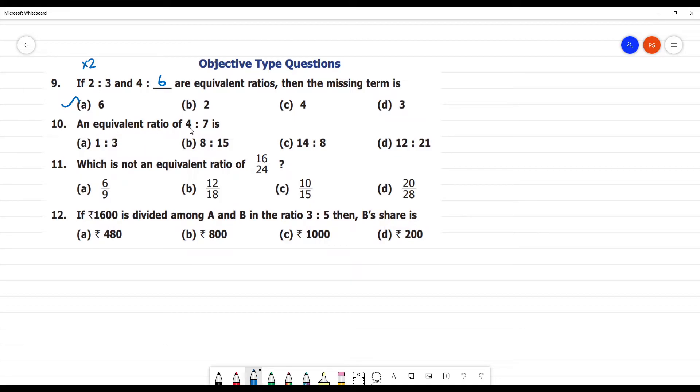Next, an equivalent ratio of 4 is to 7. Number 4 is to 7. 1 is to 3 is equivalent ratio. We have common factor here. 4 into 2 is equal to 8. So, 7 into 2 is equal to 14. Equivalent ratio is equal to 8. If you have to get 14 and 8. 7 and 8 is common term.